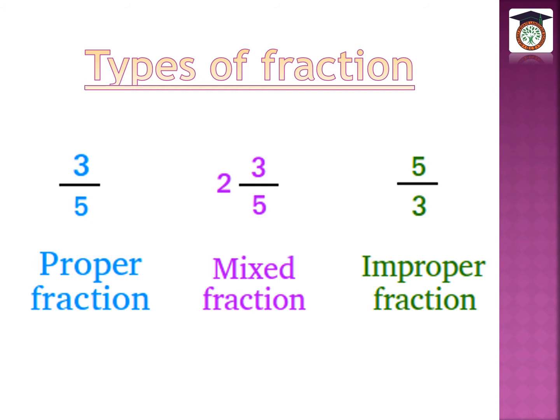What is the meaning of proper fraction? Proper fraction means the numerator is smaller than the denominator. Like 3 over 5, or 1 over 2 — the small number is on top and the big number is on the bottom. This is the first type.